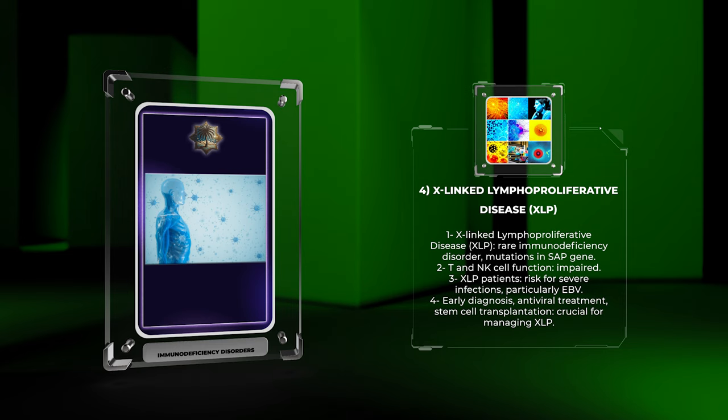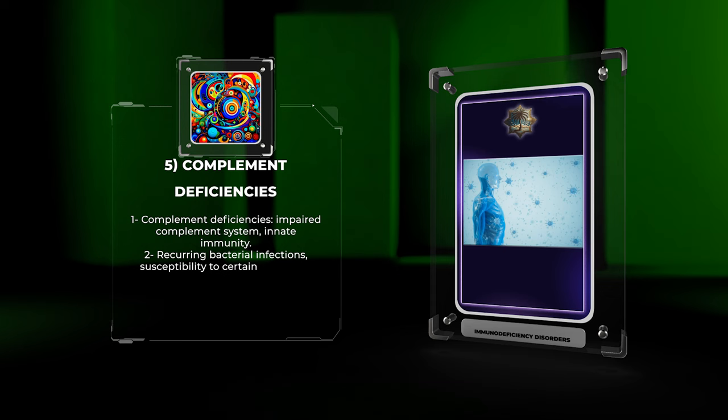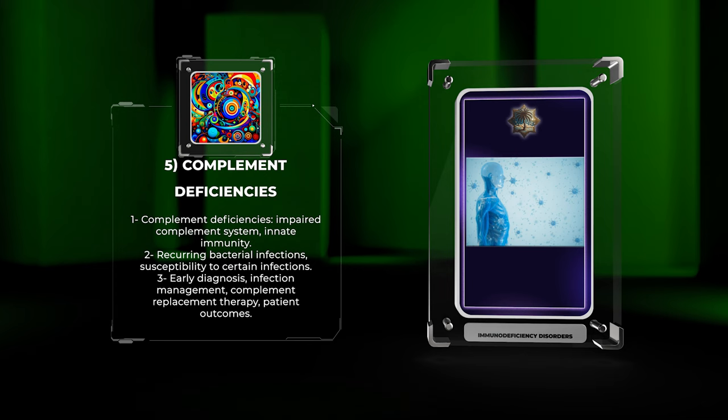Early diagnosis, antiviral treatment, and stem cell transplantation are crucial for managing XLP. Complement deficiencies are immunodeficiency disorders where the complement system, important in innate immunity, is impaired. Various deficiencies can cause recurring bacterial infections or make individuals more susceptible to certain infections.